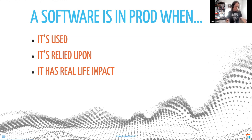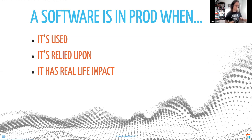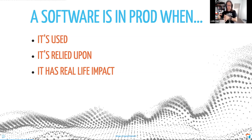I like this definition because it doesn't require millions of users. You'll hear a lot that Shiny is not for production because it's not scalable — you can't have millions of users. But very few production software actually have millions of users. Most professional production software is used by a small number of people. Even if you're a startup building an app just for yourself, if you use it, rely on it, and it has an impact when something goes wrong — it's still production software.